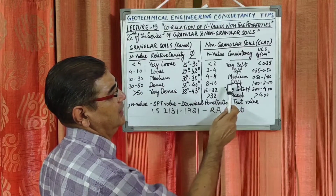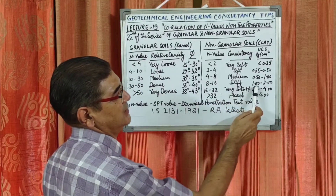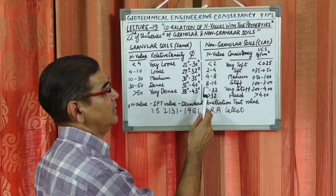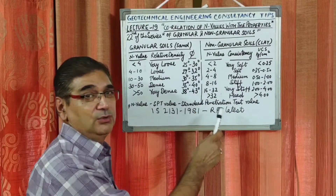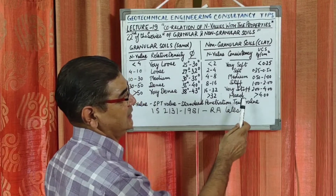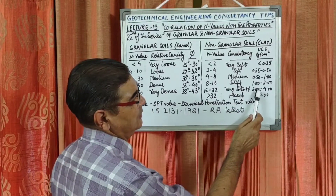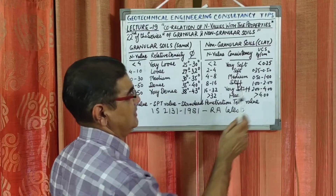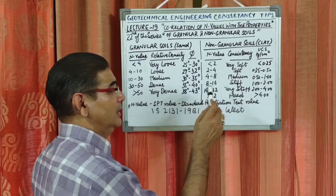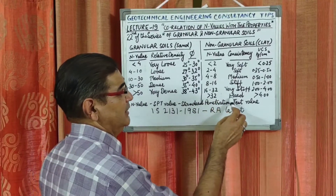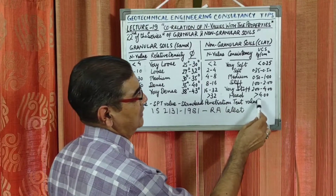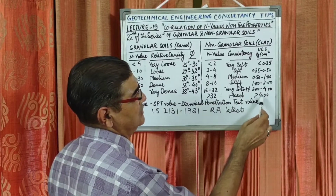Continuing clay soil classification: N between 8 to 16 indicates stiff consistency with UCS of 1–2 kg/cm²; N between 16 to 32 is very stiff consistency clay with UCS of 2–4 kg/cm²; and N greater than 32 is termed as very hard consistency cohesive soil with correspondingly high UCS values.